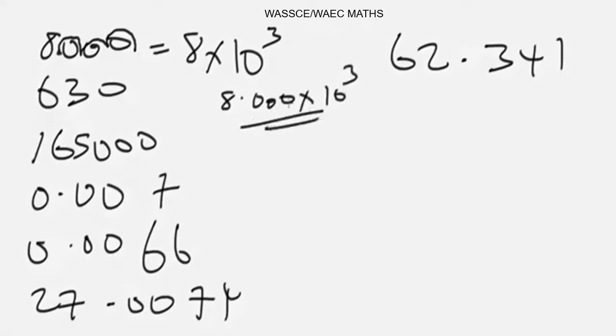Because these zeros after you have put the point after 8 are not significant values, so there's no point in putting them there. Just write it correctly as requested. Now having known this, let's go ahead and look at the second example and express it in standard form.